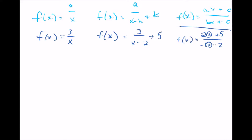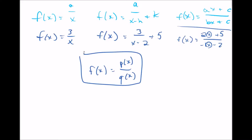So those are the three we talked about yesterday. We have to expand this a little bit because there's one more type that 8.3 focuses on. It's f of x equals some polynomial p of x over some polynomial q of x. That's the fourth type we're going to talk about today. An example might be y equals x squared plus 3x minus 4 over x minus 2.